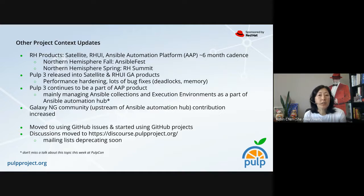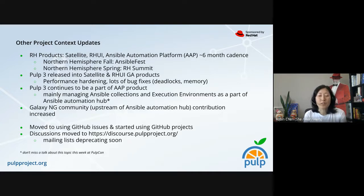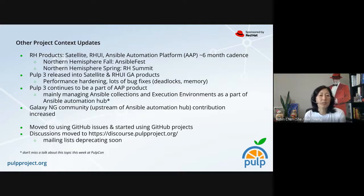Pulp 3 continues to be a part of the Ansible product, managing Ansible collections and execution environments as part of the Ansible Automation Hub part of the platform. Another thing you may see is Galaxy NG, which is the upstream — a lot of those community members have been contributing to the Pulp project with a lot more collaboration. You'll see that they are making those contributions, and the Pulp team has been doing a lot of shepherding of those contributions.